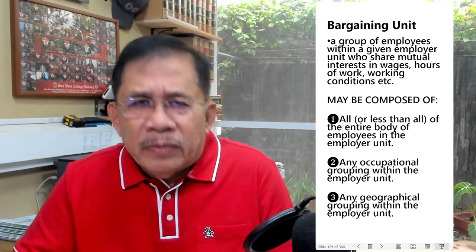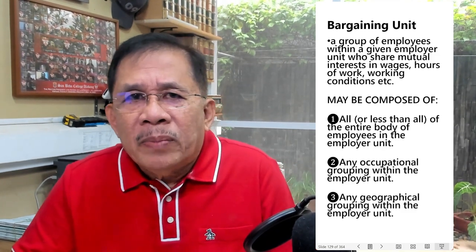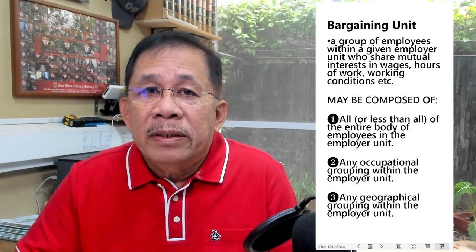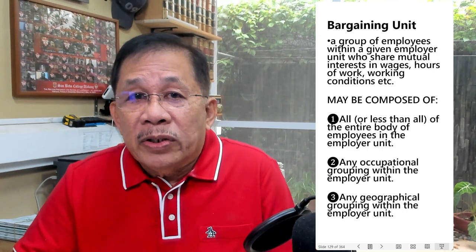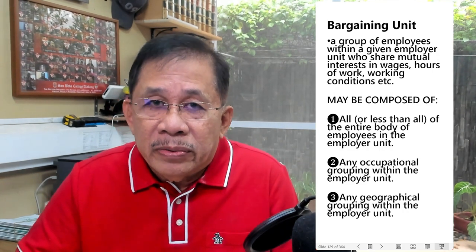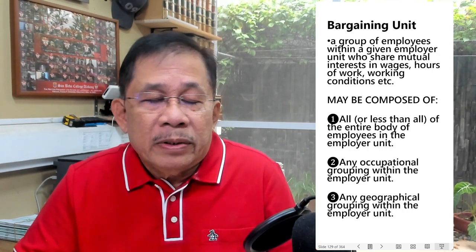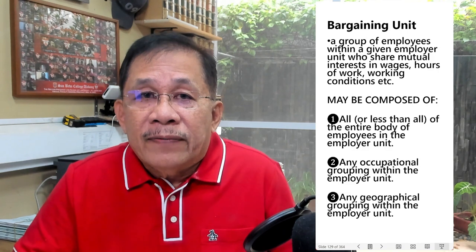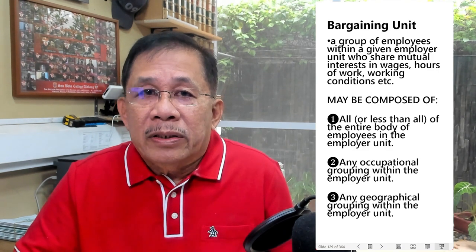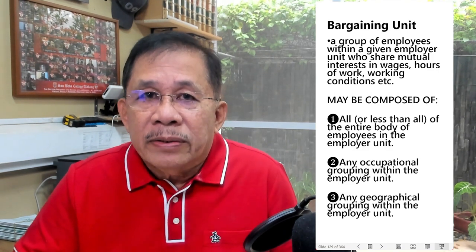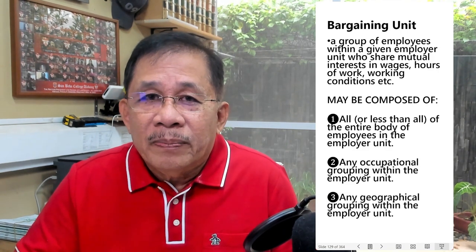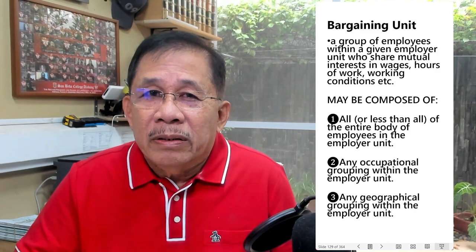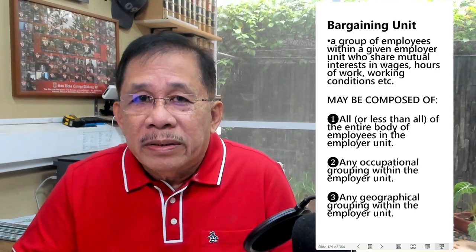A bargaining unit may be composed of all or less than all of the entire body of employees in the employer unit. For example, a bargaining unit of rank and file, a bargaining unit of supervisors, a bargaining unit of hourly paid workers, or a bargaining unit of daily paid workers.